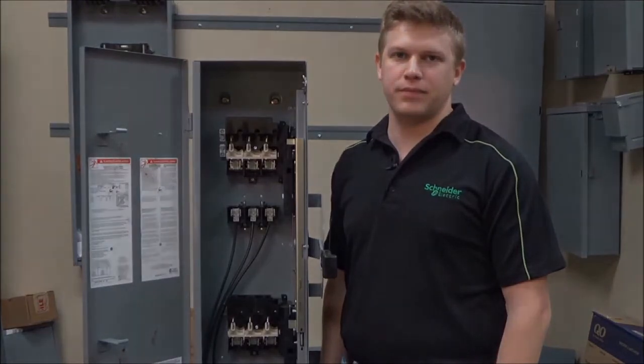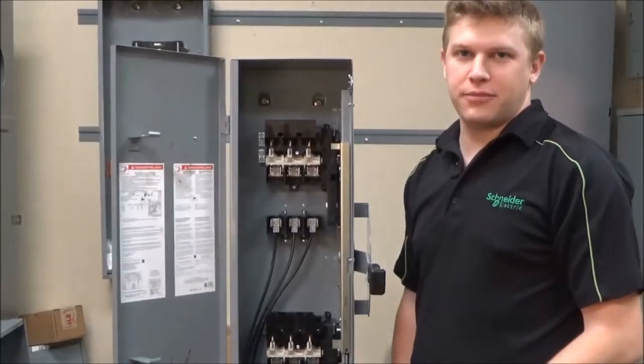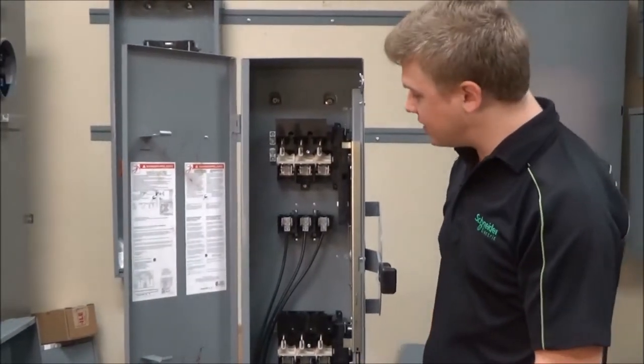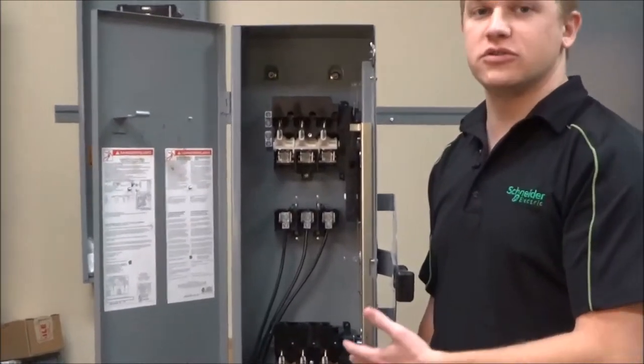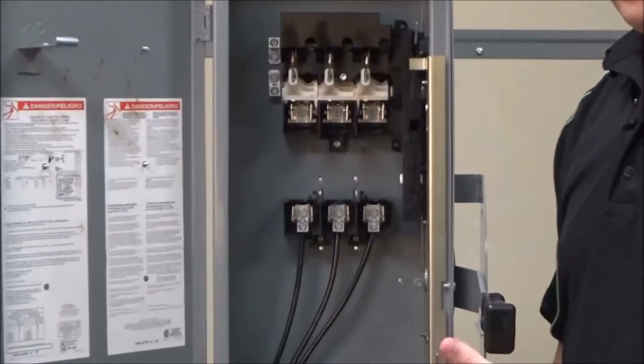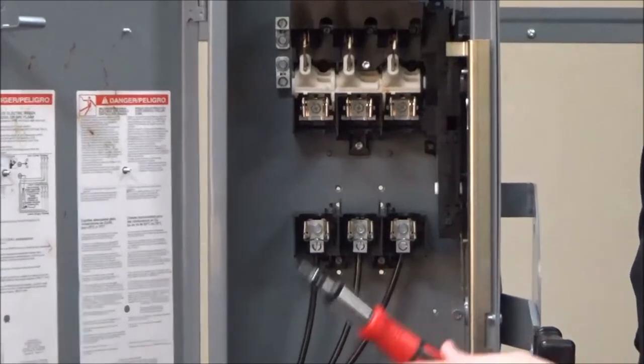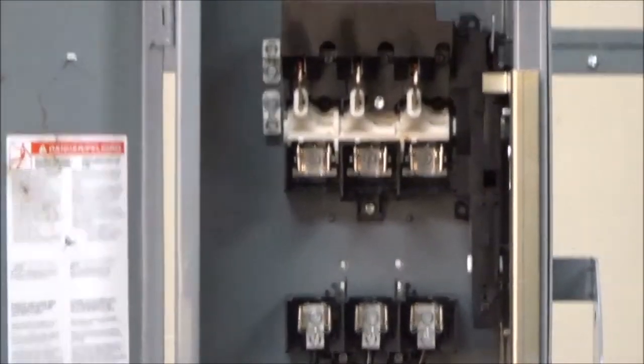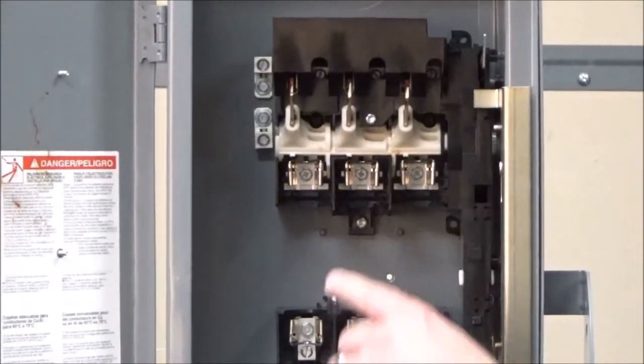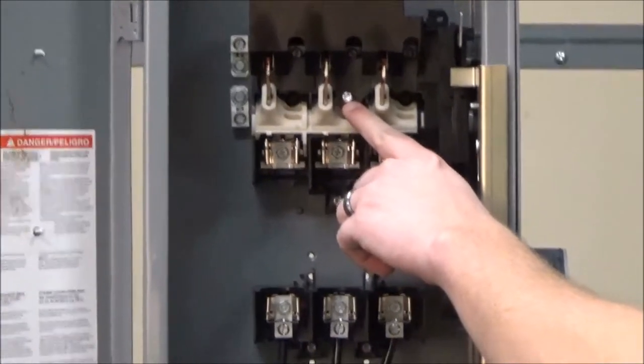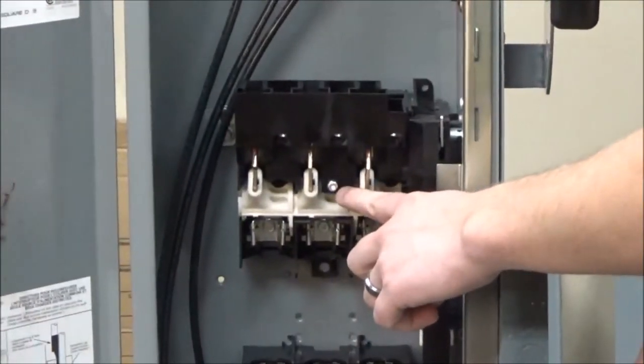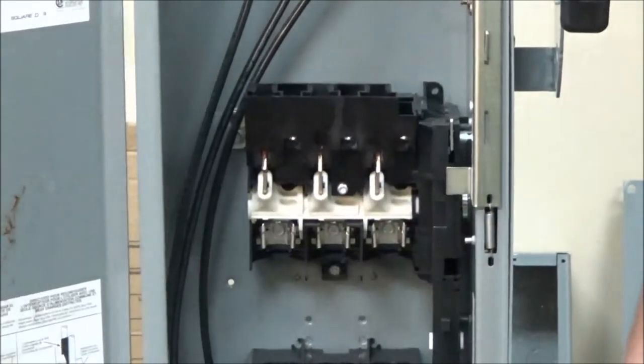The first step, if your switch already has the fuses installed, would be to remove the fuses. Then using a Torx screwdriver, you would remove the arc shields by removing this screw and this screw, and retaining the arc shields.